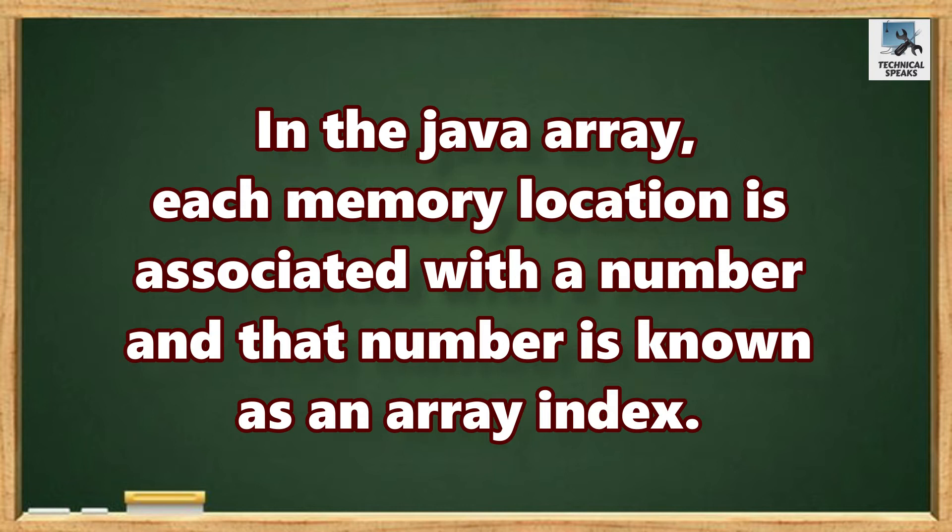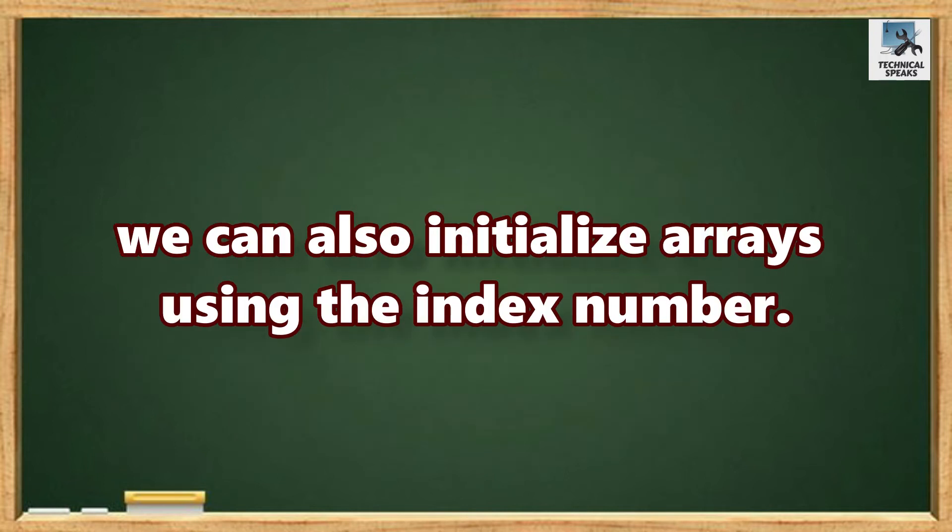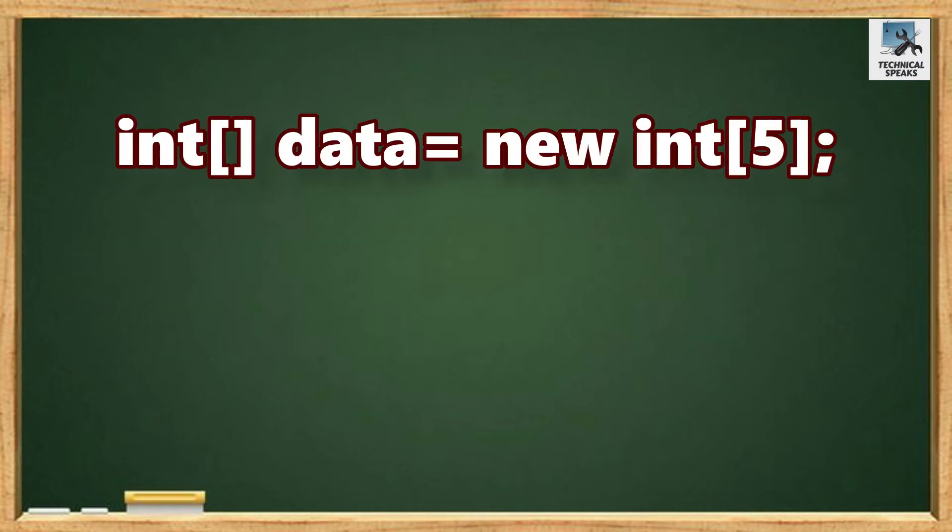number is known as an array index. We can also initialize arrays using the index number. First, declare an array: int data equals new int and inside the bracket pass 5.